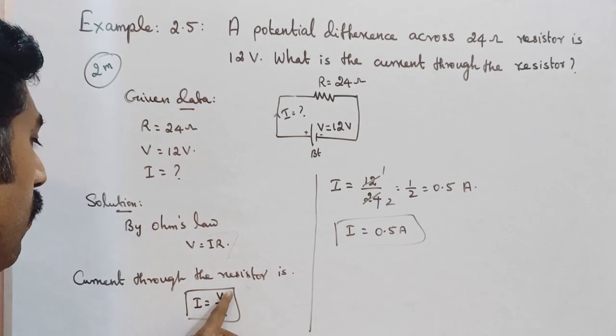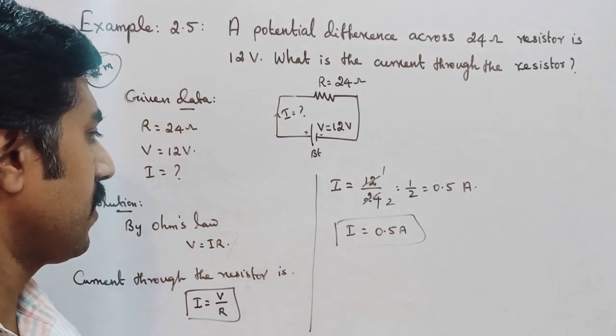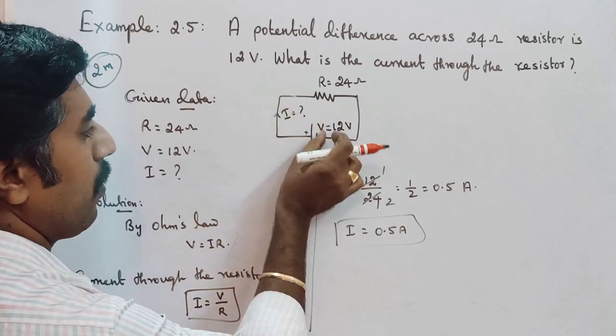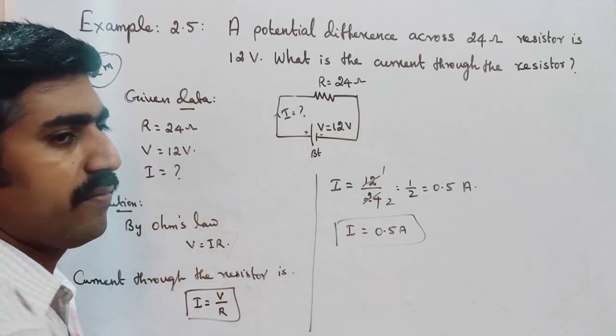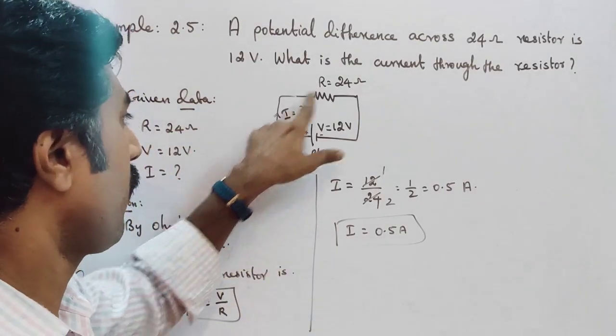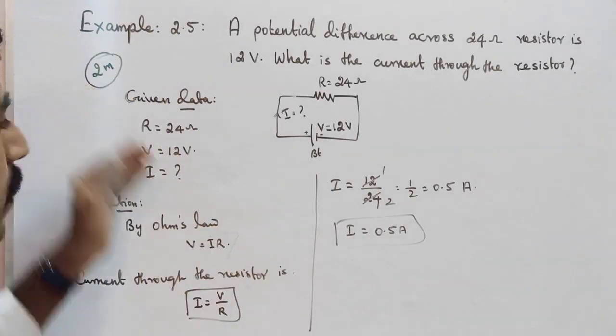So the answer is I is equal to 0.5 Ampere. 12 volt potential difference, 24 ohm resistance value resistor, the flow is 0.5 Ampere. So it is a 2 mark or 3 mark question.